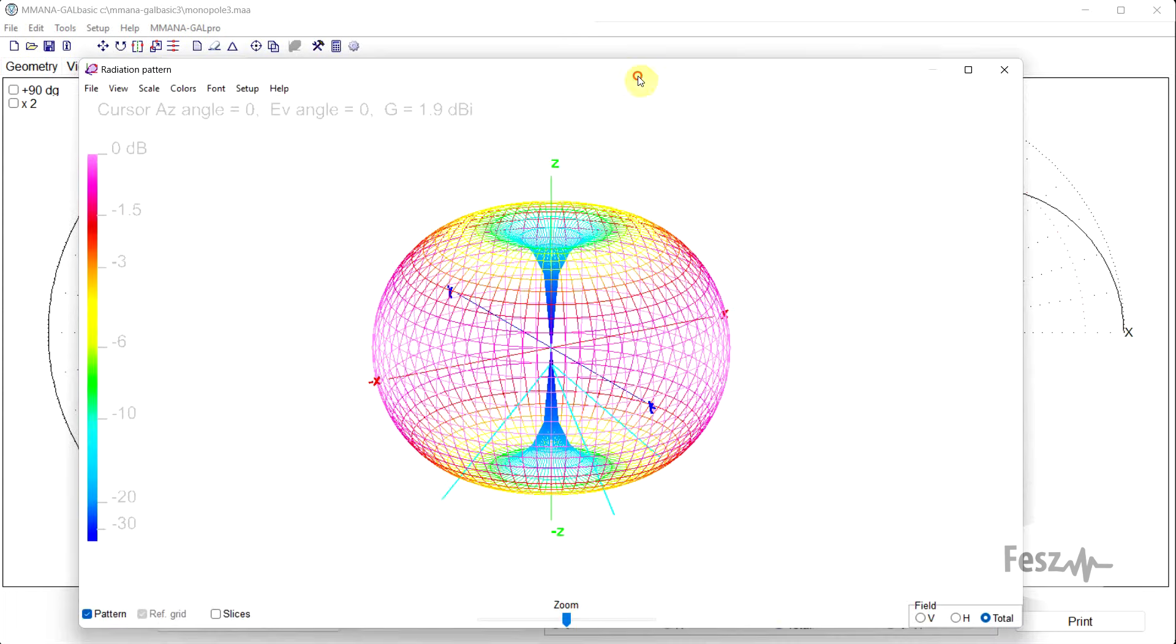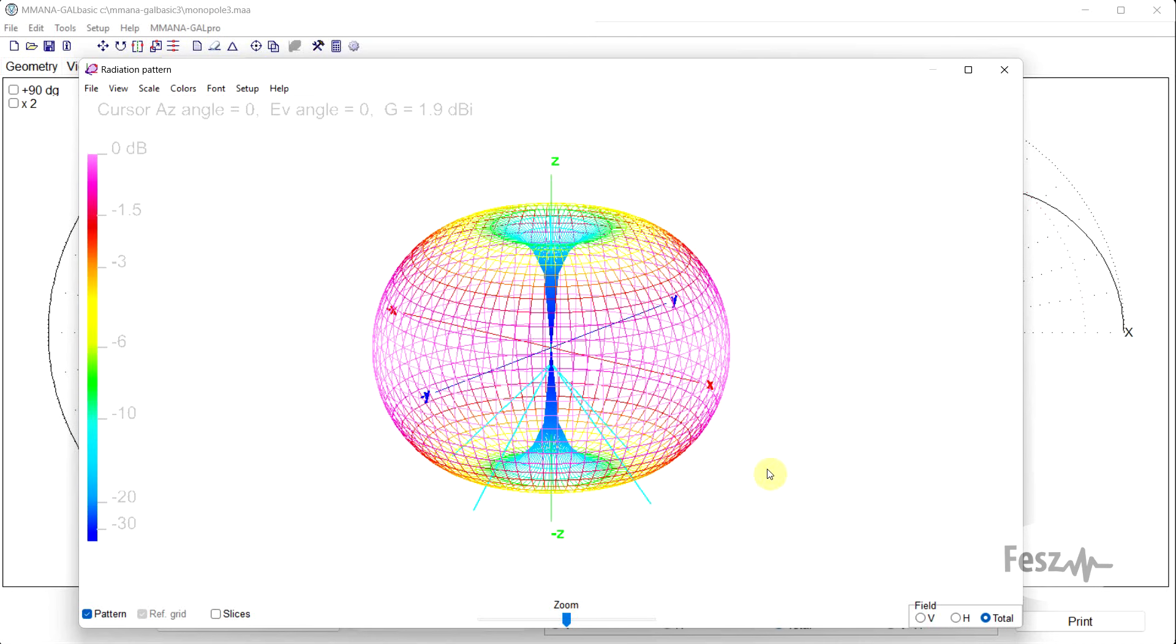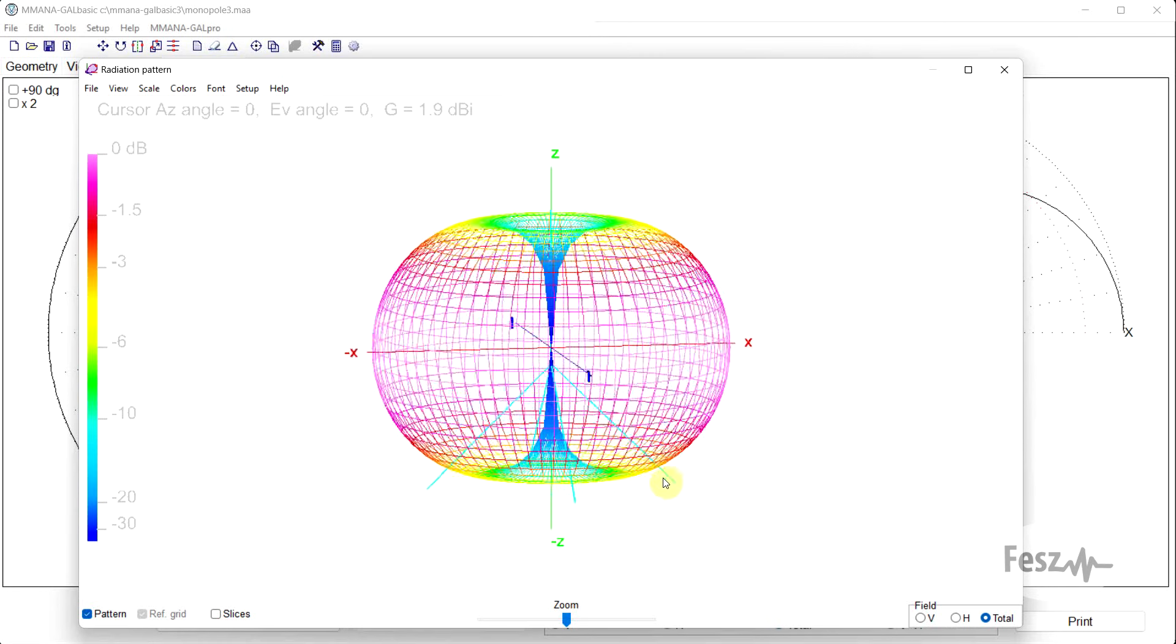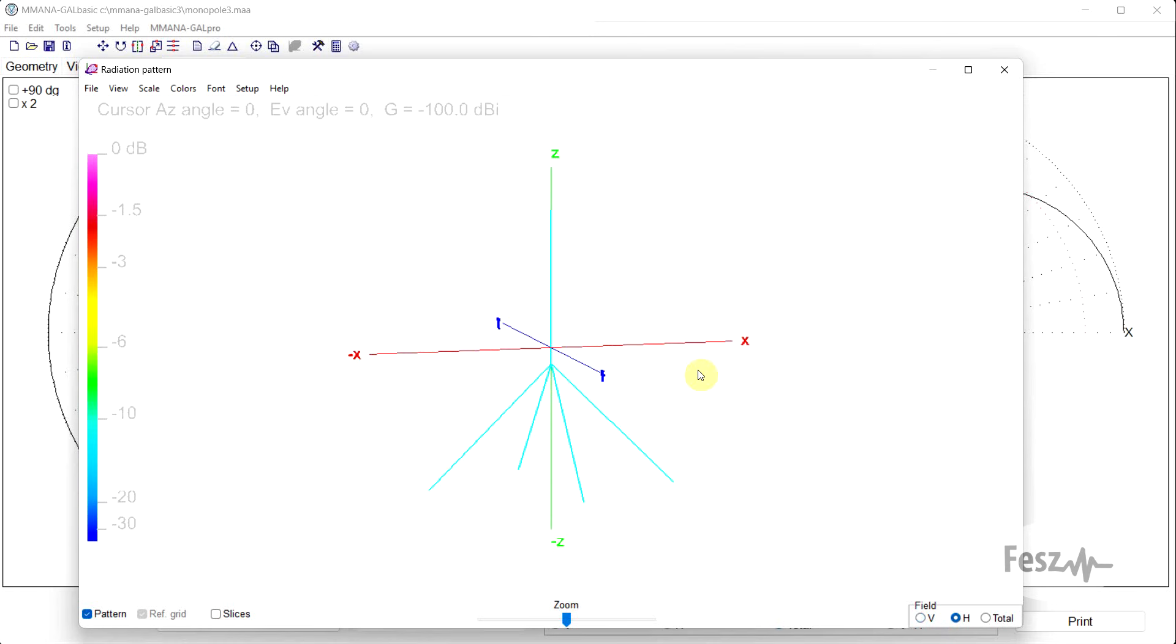Finally, looking at the radiation patterns, we can see that in free space at least, we have a very nice donut shape, with the antenna being omnidirectional in the plane perpendicular to the central element. And while the polarization is purely vertical, if we turn to horizontal, there's absolutely nothing.